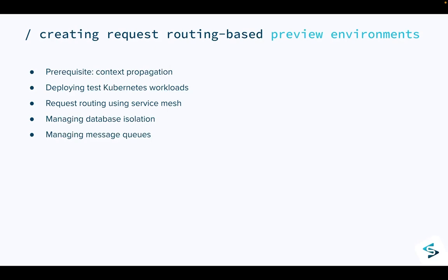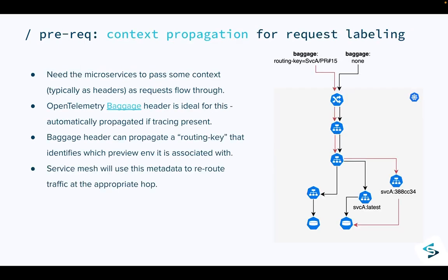There are several pieces to this. First, what do you need as a prerequisite to set up this kind of system? Then we'll get into how you set it up concretely within your current CI/CD and service mesh workflow. The prerequisite is: how are these requests knowing their identity so that they're being treated differently at different hops? The service mesh is helping you make a localized routing decision at a particular layer, enabling it to treat a particular request differently from another. For this to work, you need some notion of common context being passed along the entire request.